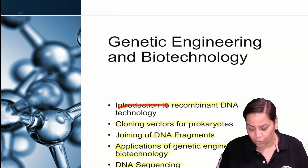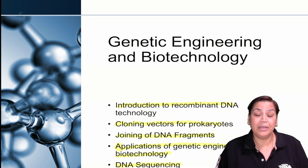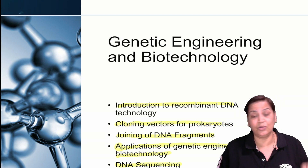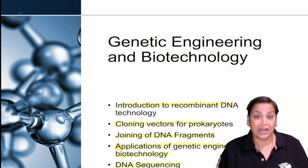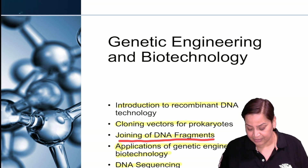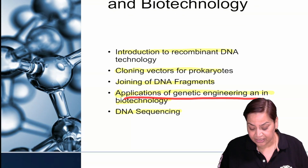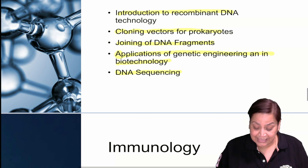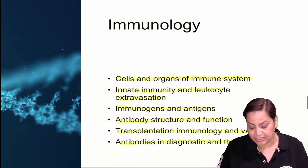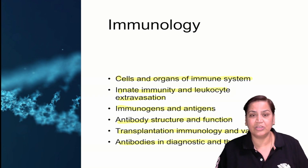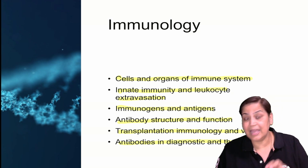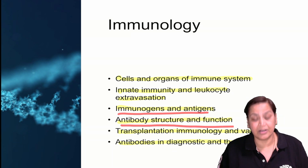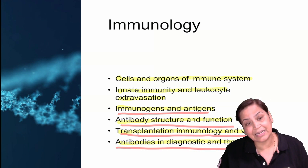Then genetic engineering - the core of medicine nowadays. Topics include recombinant DNA technology, cloning vectors for prokaryotes whether you are using plasmids, phagemids, or yeast artificial chromosomes, how DNA fragments are joined, and the applications of genetic engineering in biotechnology. Also DNA sequencing - the Sanger method you have studied. Finally, immunology: primary and secondary immune response, passive immunity, active immunity, vaccines and different types of vaccines, immunogens, antibody structure and function, transplantation immunology, and antibodies in diagnosis and therapy.